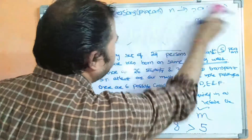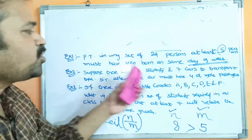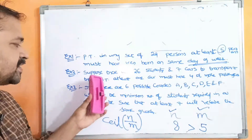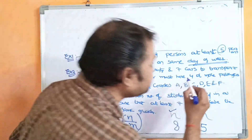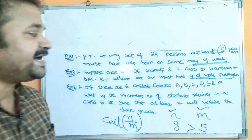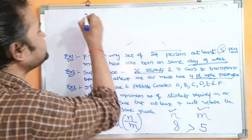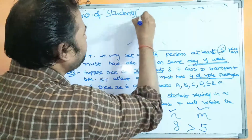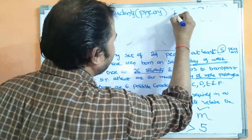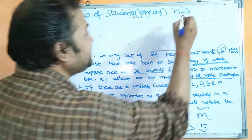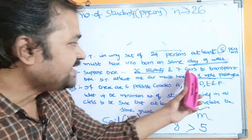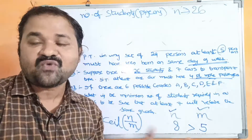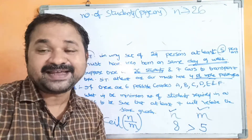Now let us see the second problem. Suppose there are 26 students and 7 cars to transport them, such that at least one car must have 4 or more passengers. The number of students is n equals 26. Students are the pigeons, represented by n.